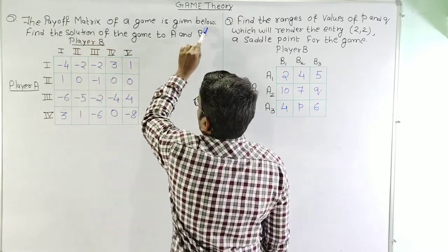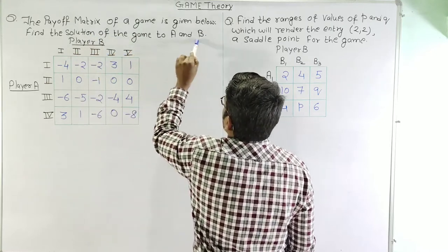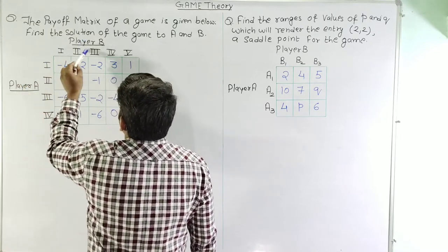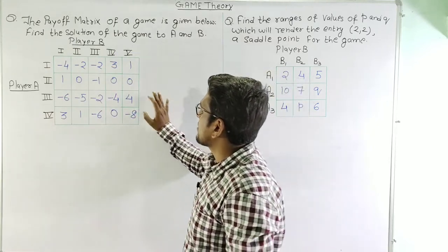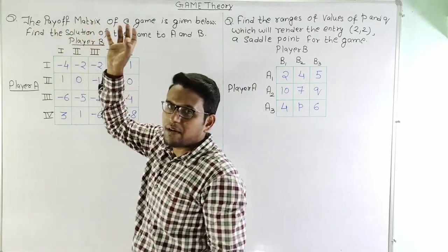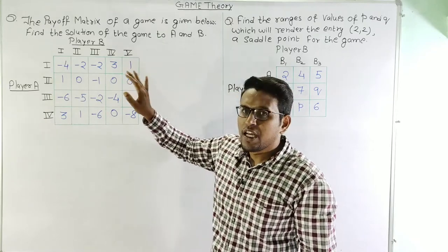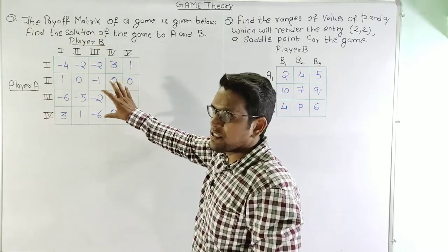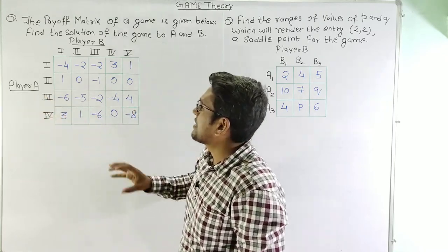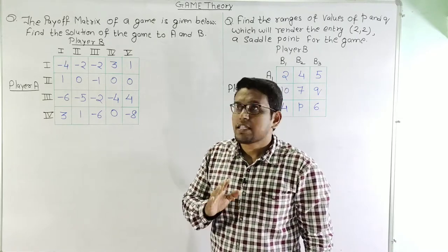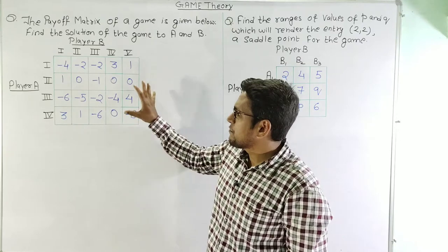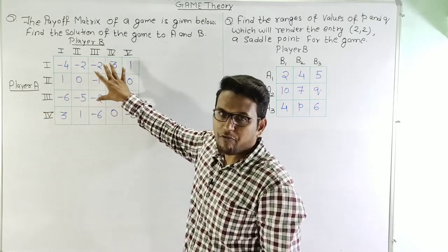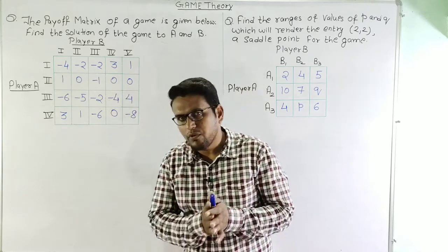The first problem says that the payoff matrix of a game is given below — find the solution of the game for player A and player B. There are two players: player A has four strategies and player B has five strategies. Since the problem has not specified whether the payoff matrix belongs to player A or player B, by default we consider the player with horizontal strategies, so this is the payoff matrix for player A.